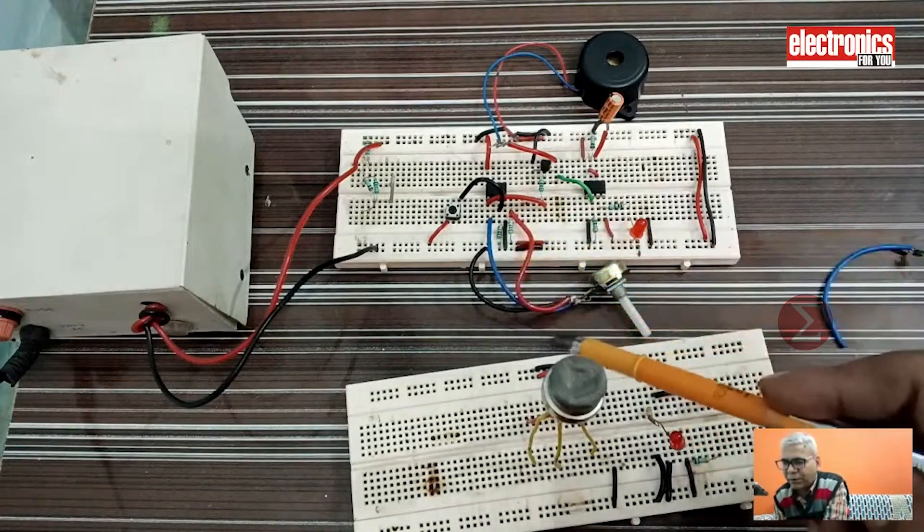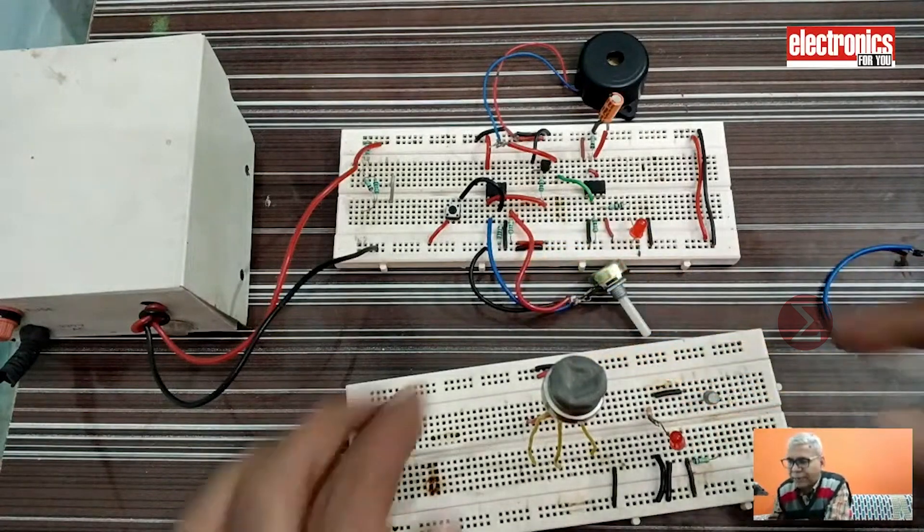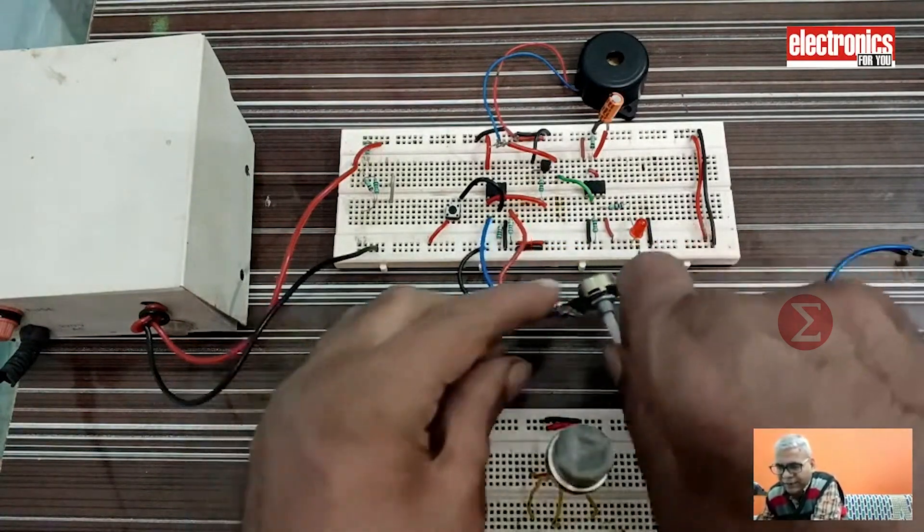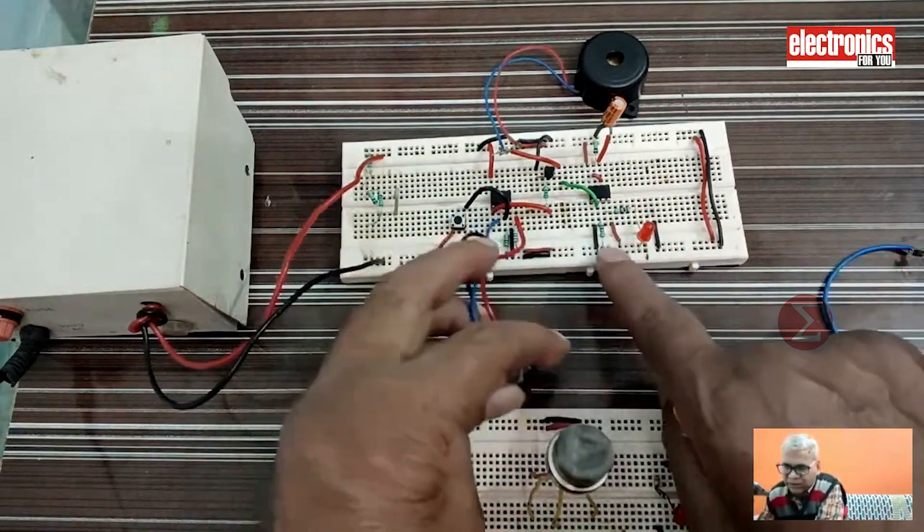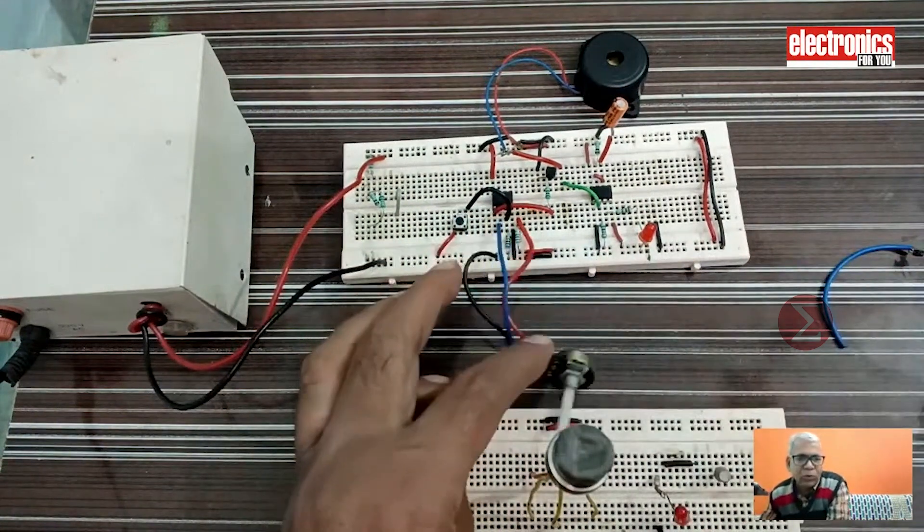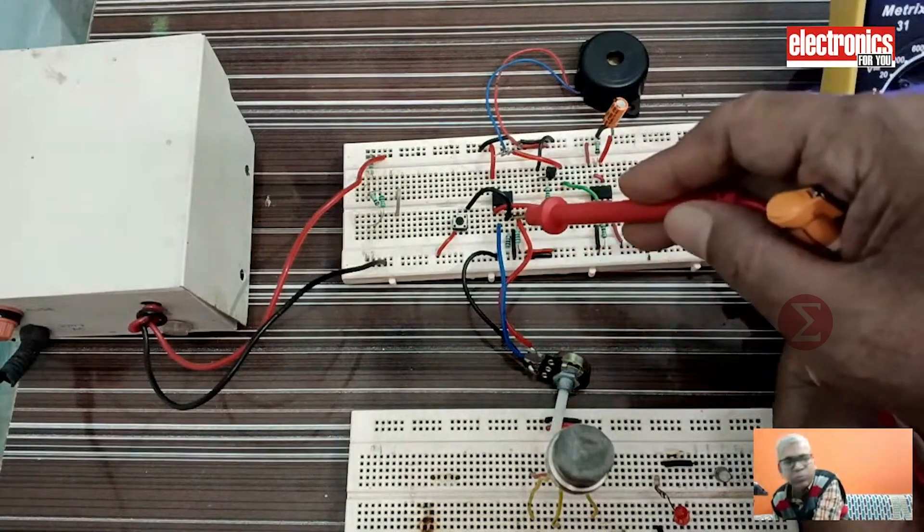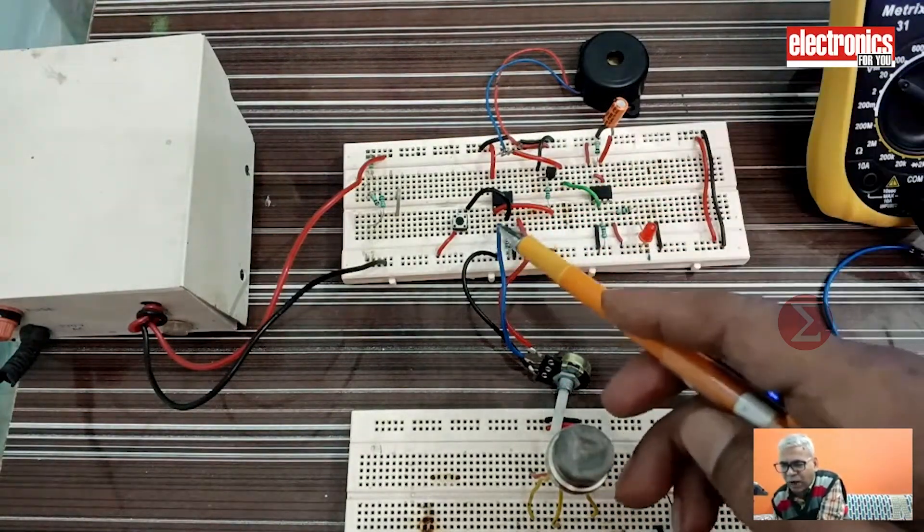We have connected a pot meter to pin 2, that is the inverting input of the operational amplifier, to set the reference voltage for the comparator. We will use a multimeter to set this reference voltage.